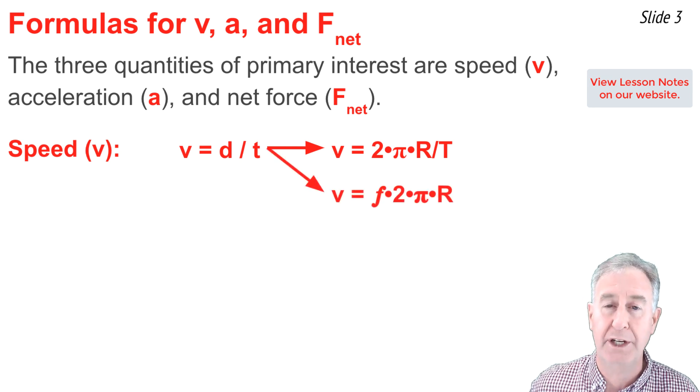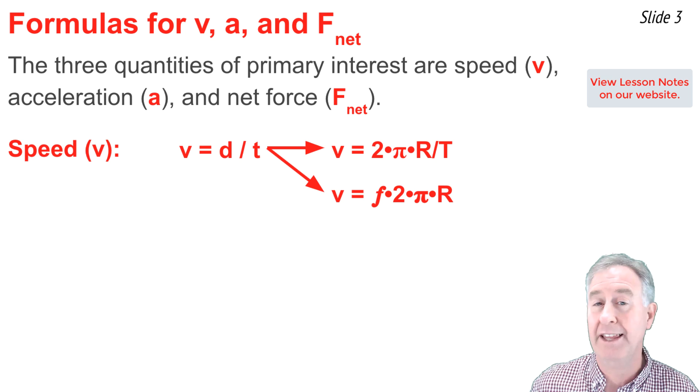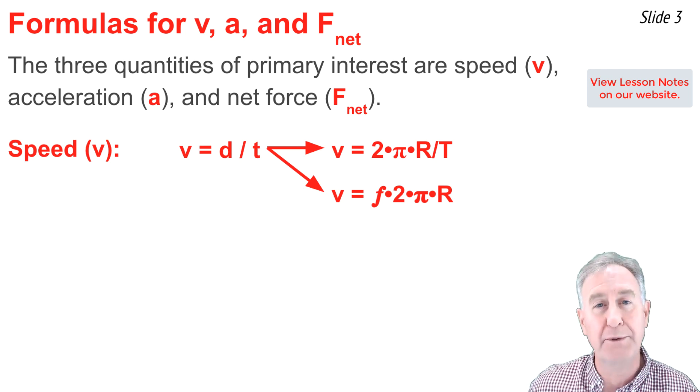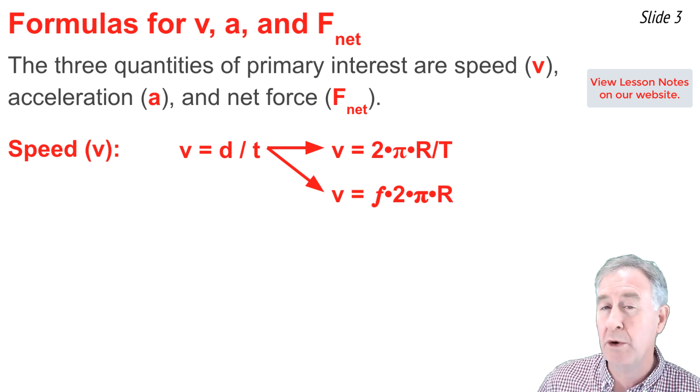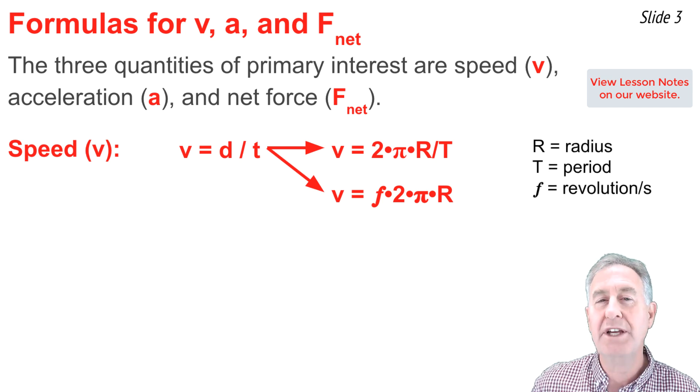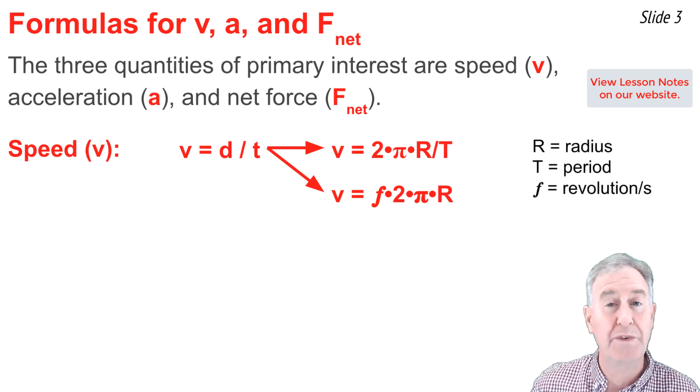But sometimes we don't know the period. Instead, we're given some information like the object makes 5 revolutions per second. I would call that the frequency of revolution and represent it by the symbol f. So to calculate the speed based on knowledge of the radius and the frequency of revolution, I would use the formula v equal frequency times 2 times π times r.